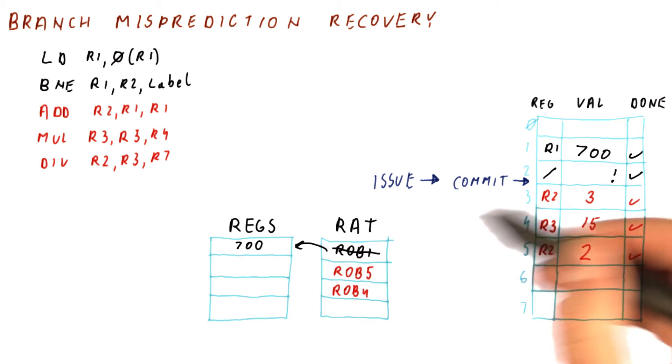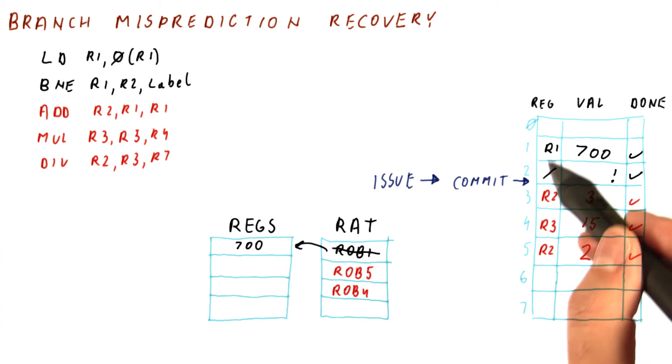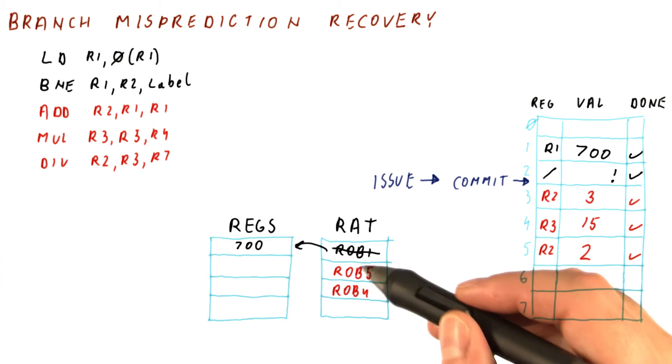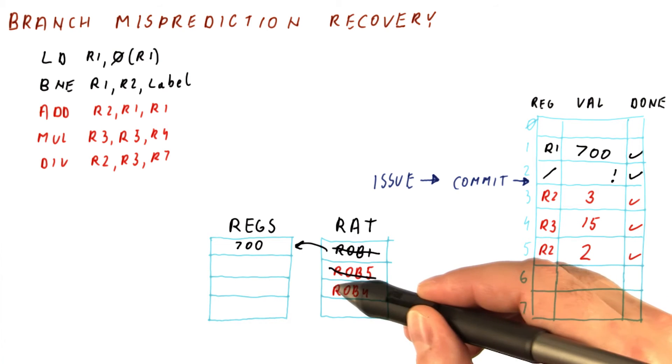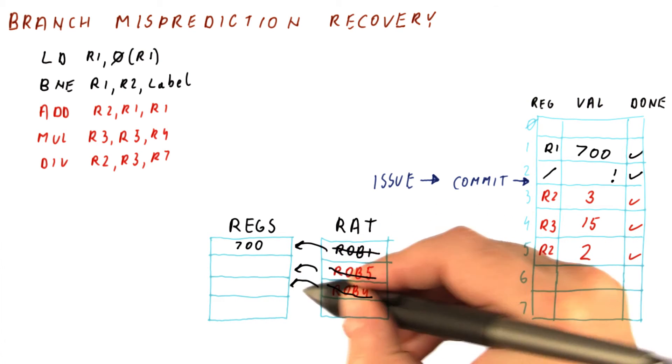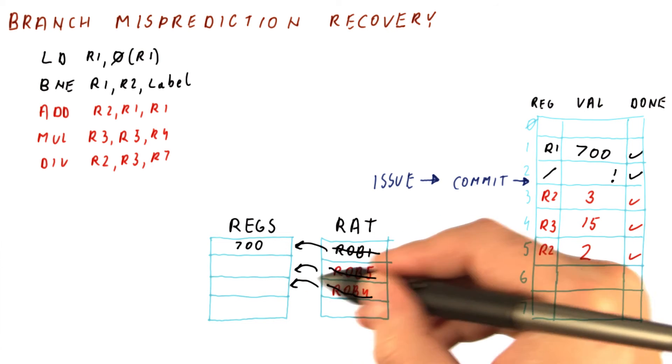Well, because the registers contain exactly the correct values as of this point, undoing the damage in the RAT simply consists of rewriting whatever is in the RAT so that each RAT entry points directly to its corresponding register.